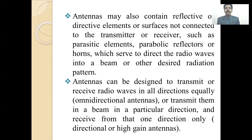Therefore, an antenna can be designed to transmit or receive radio waves in all directions equally — which relates to the types of antennas. The types of antennas will be explained in the next video lecture. For now, we have covered the basic idea about the term antenna and its important significance in our Antenna Wave Propagation subject. All transmissions go into a particular beam or direction, which will be able to receive all these radiating fields. The next lecture involves the various fundamental parameters of antennas. Thank you.